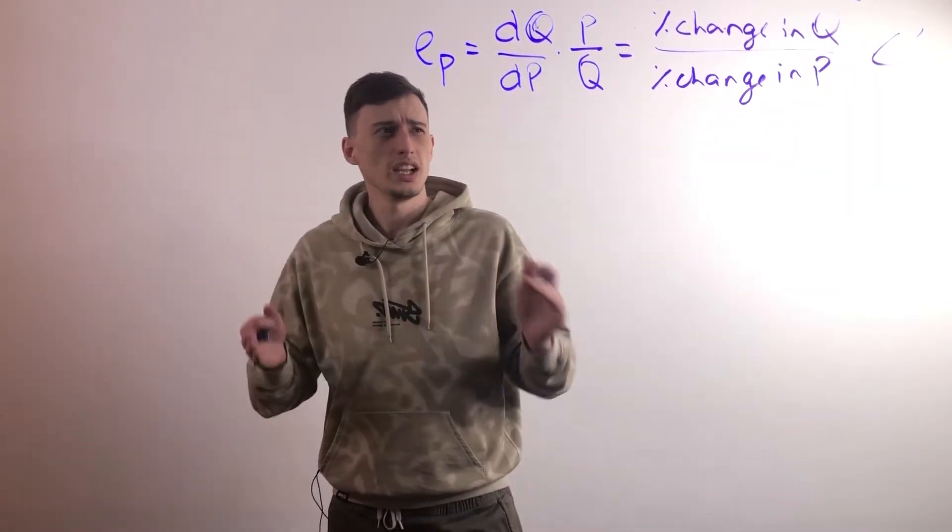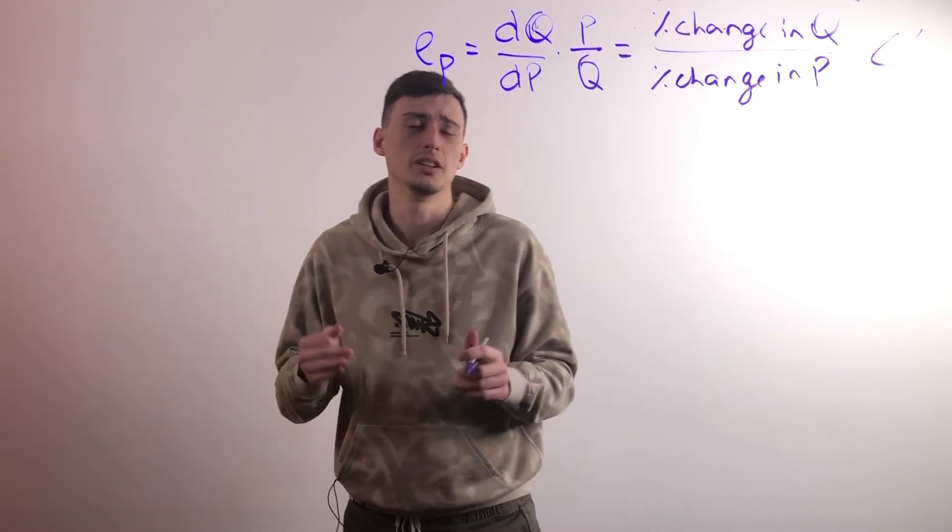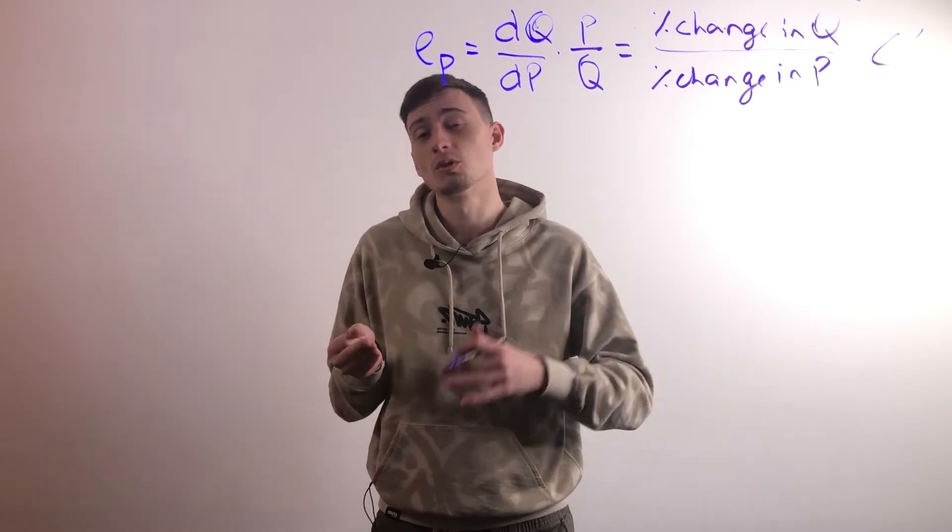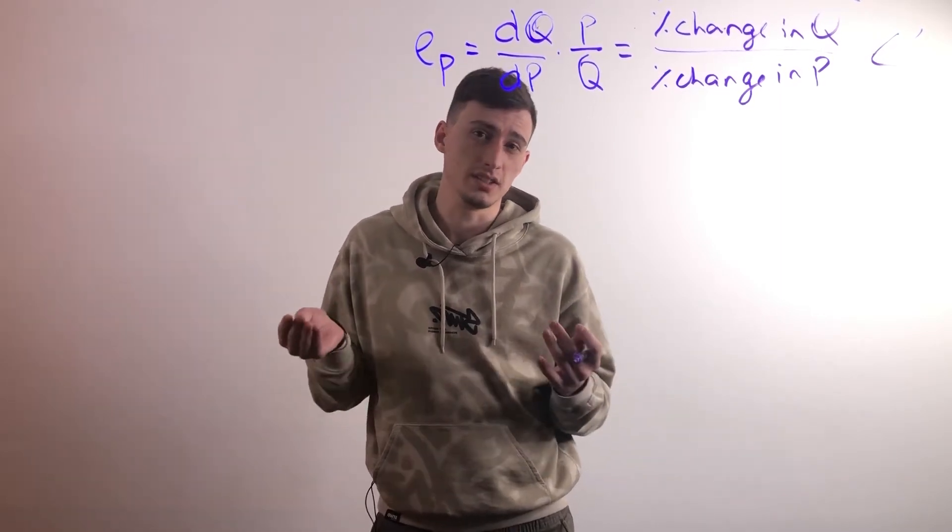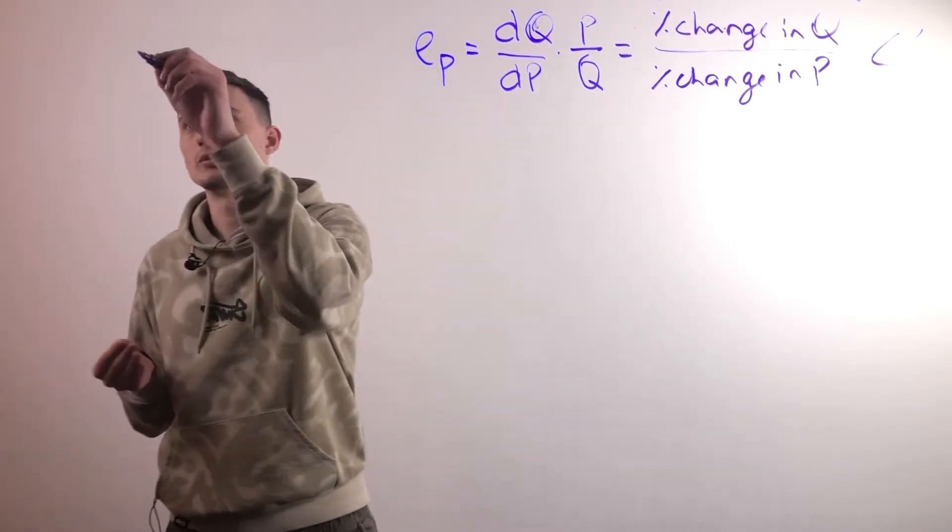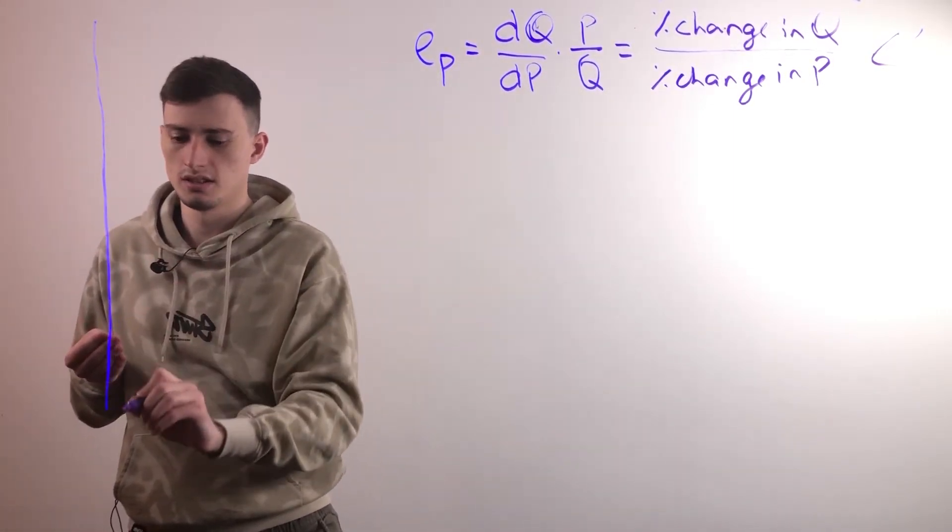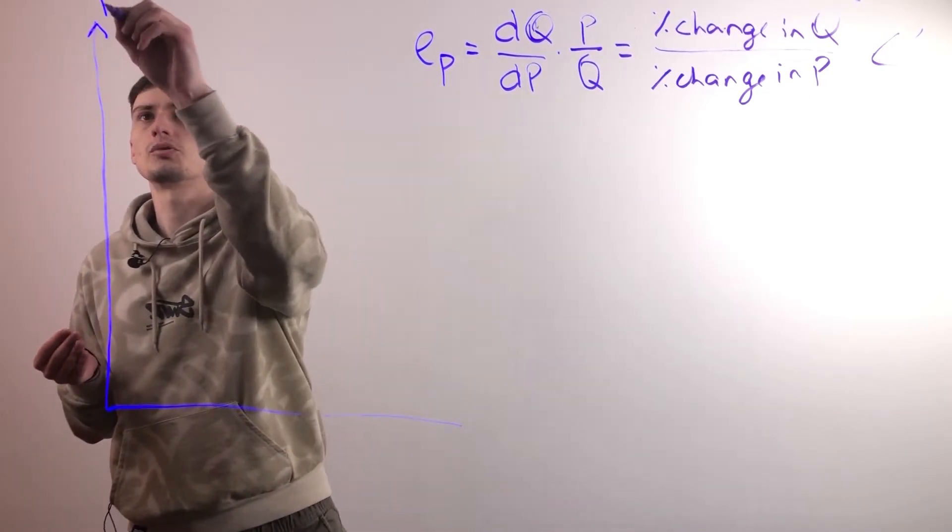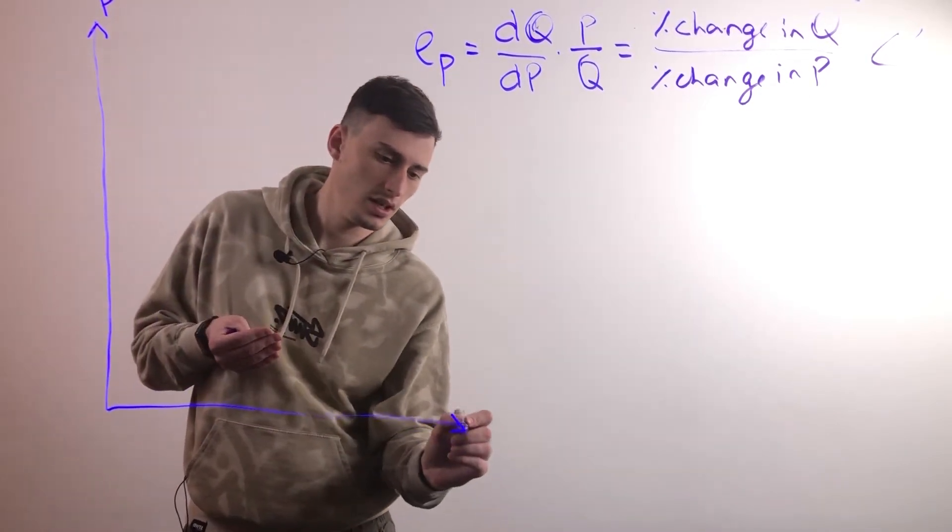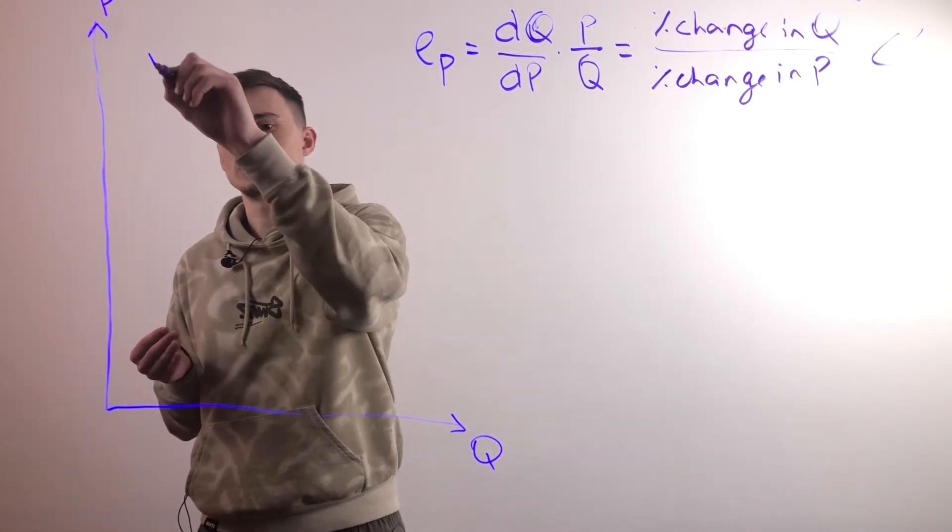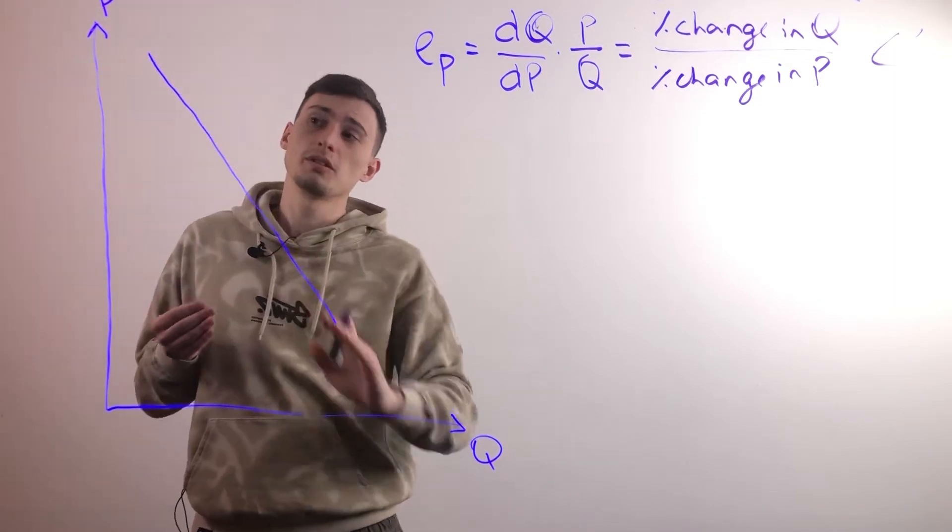Now as you know from our previous videos, there's an inverse relationship between price and quantity. So when something becomes more expensive, people will buy less of it, and likewise when something becomes cheaper, people will buy more of it. And if you remember, that's represented by the demand curve. We have our graph with price up here and quantity over here. The demand curve, as we all know, goes down like this at a perfect 45 degree angle.